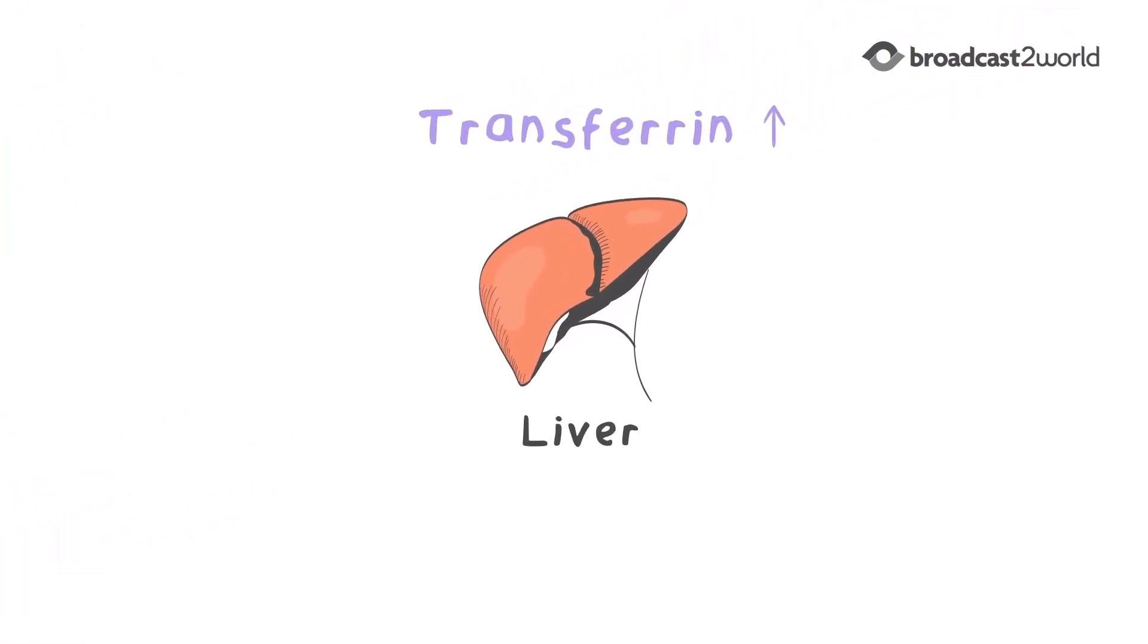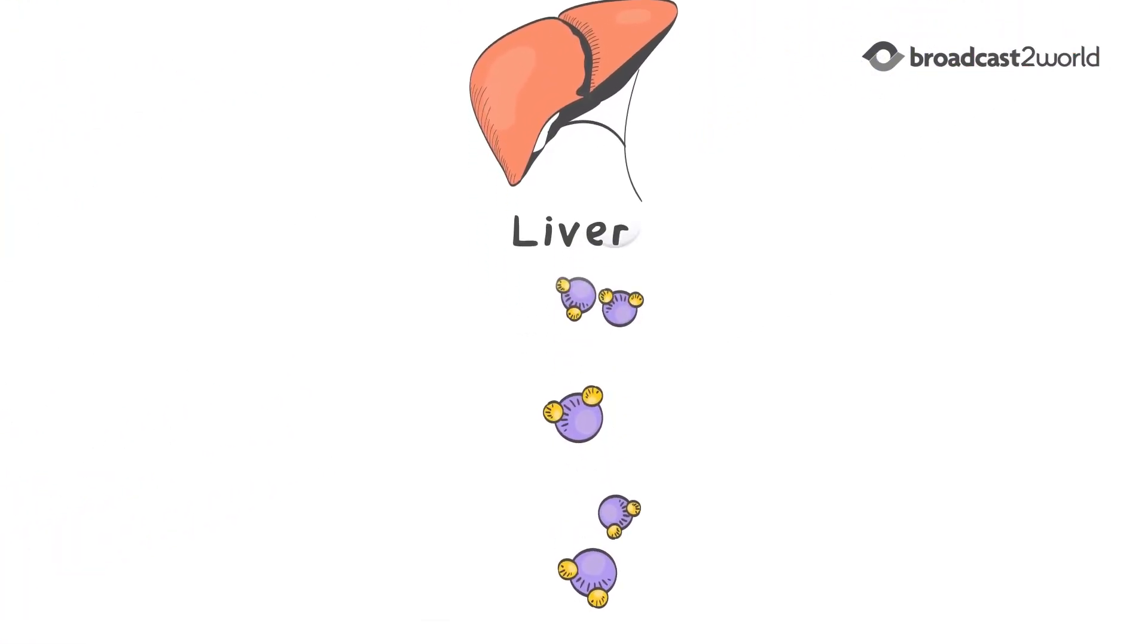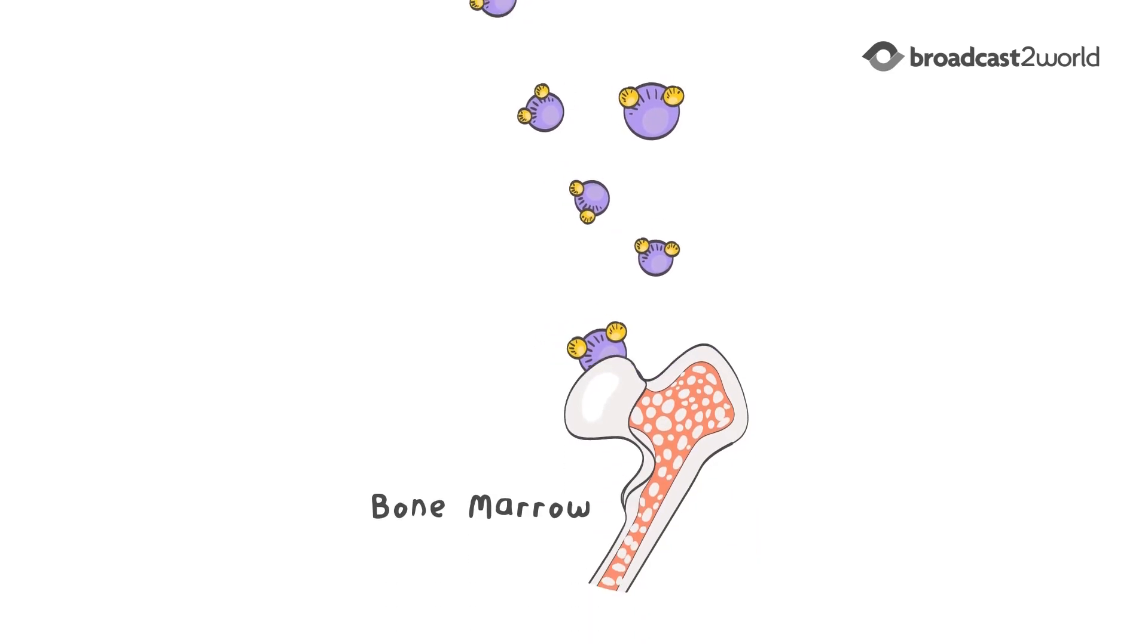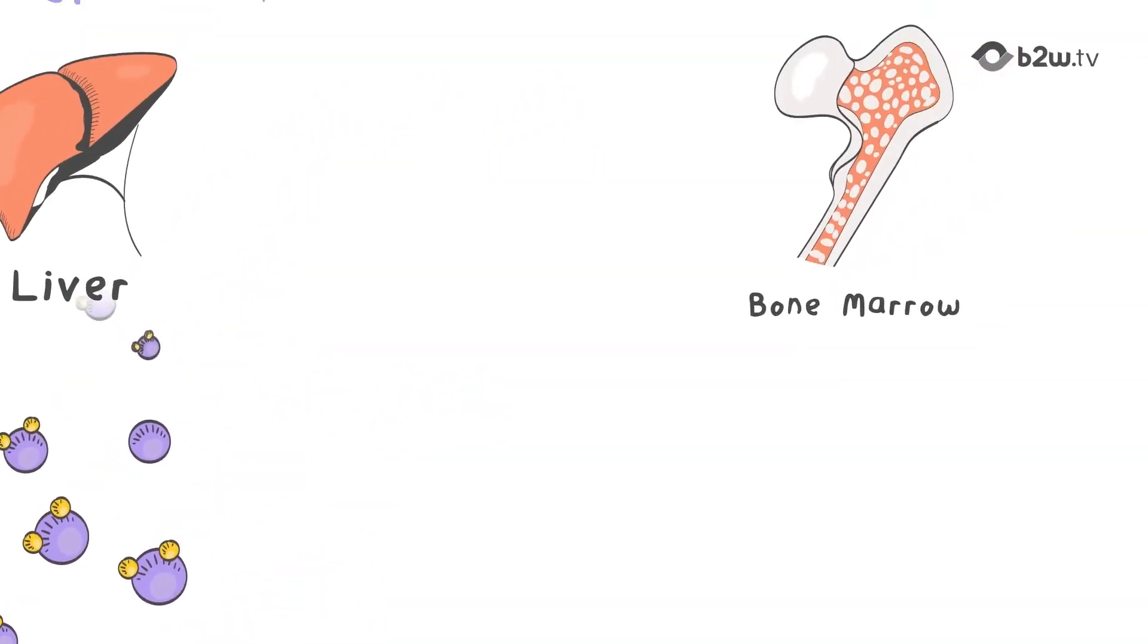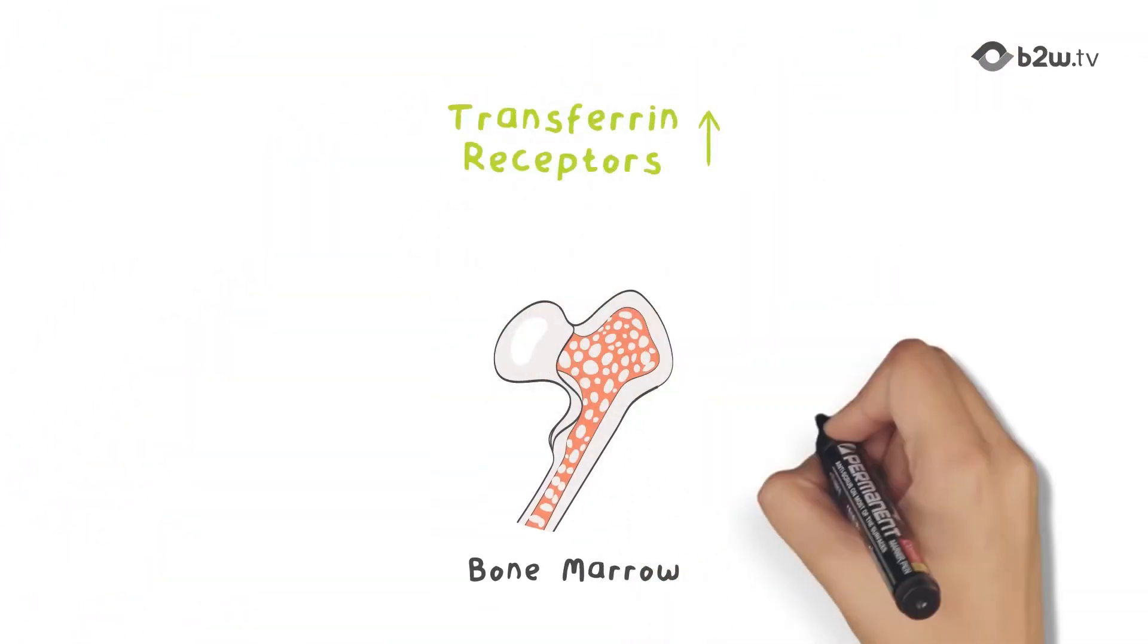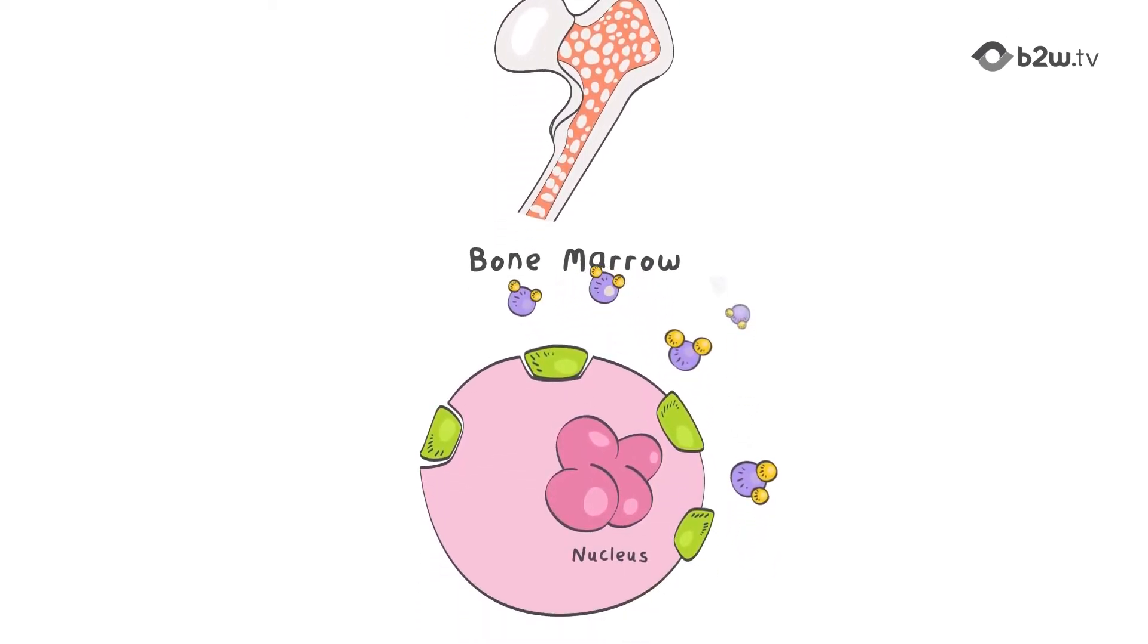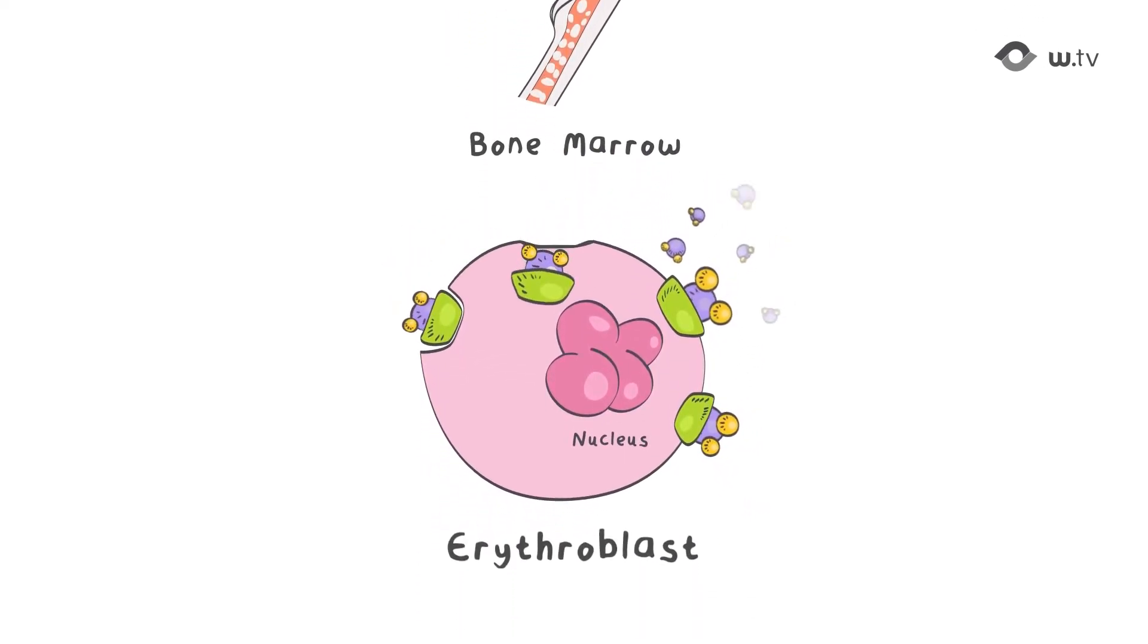Third, production of transferrin in the liver, leading to increased transport of iron to the bone marrow. And fourth, increased transferrin receptors, leading to increased uptake of iron into erythroblasts.